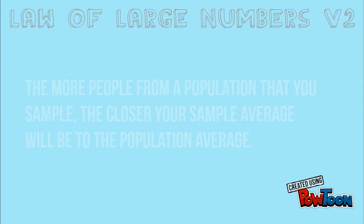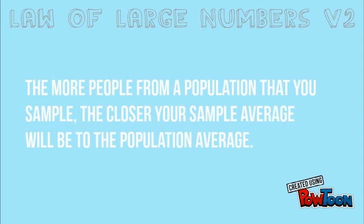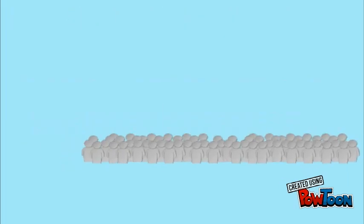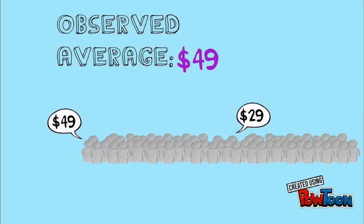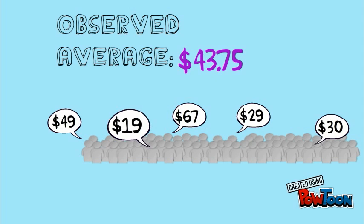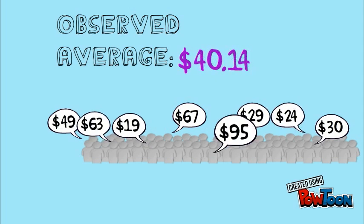Another version of the law of large numbers explains that the more people from a population that you sample — the larger your sample size — assuming your sample is free from bias, the closer your sample average will be to the population average. Let's say you have a group of 100 people, each with some number of dollars in their wallet. If we ask one person how much money she has in her wallet, we'll get our first observation: $49, which might be pretty far from the average of the group. After asking the second person — $29 — and averaging that value with the first, we are likely to have a better estimate of the group average. As we continue adding observations and increasing our sample size, we'll generally get better and better estimates of the group's average.